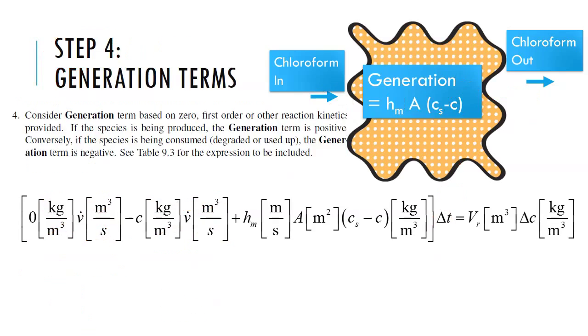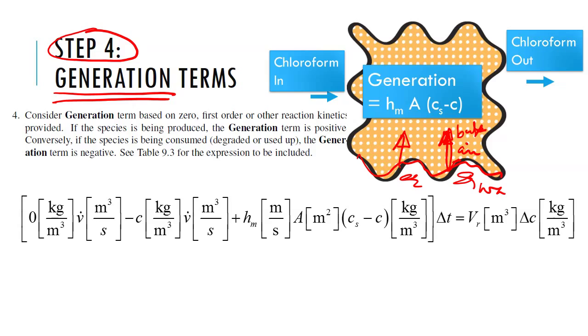In step four we want to do the generation term. So the generation term, chloroform is getting from the water into air and then getting into the bulk air. So first it gets to the surface air and then to bulk air.